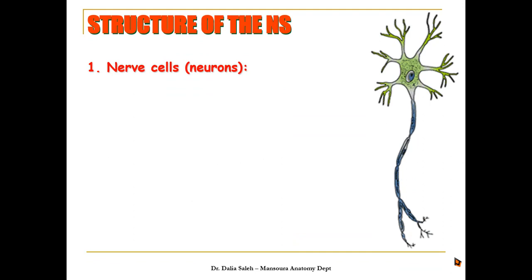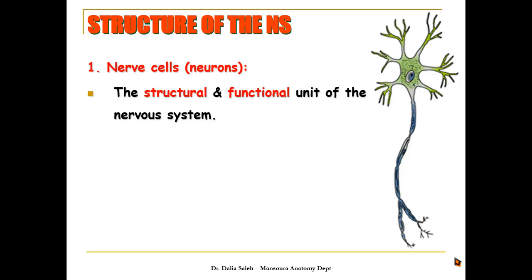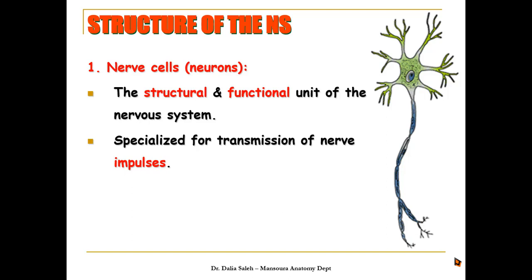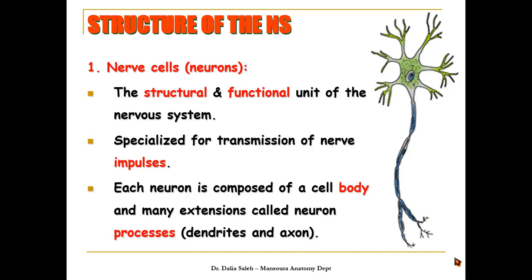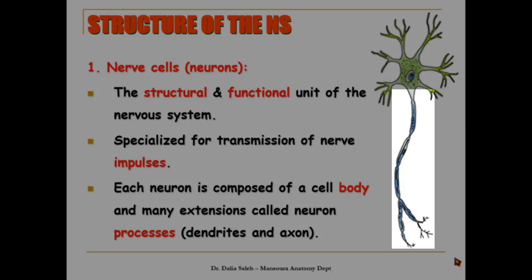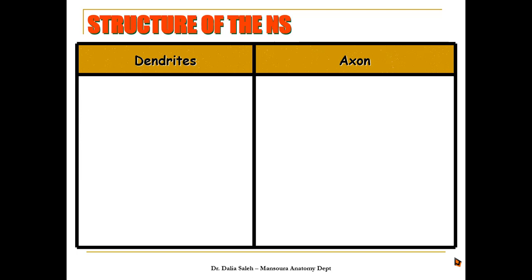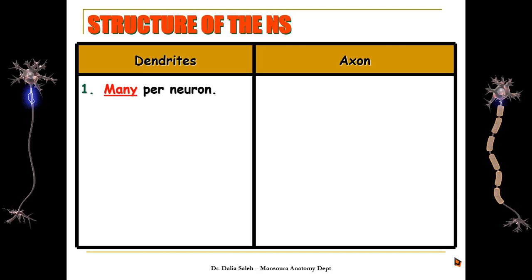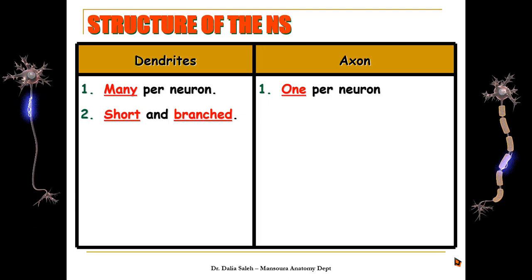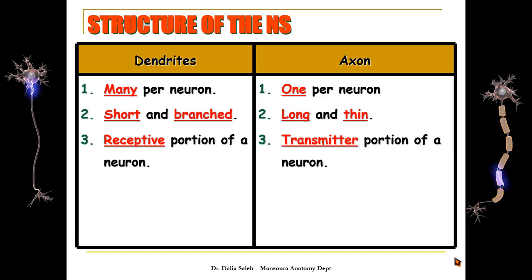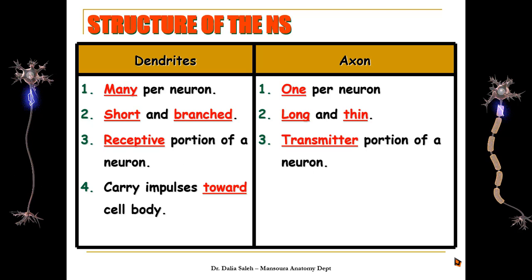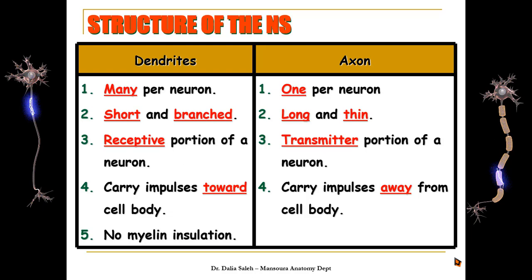The neuron is the structural and functional unit of the nervous system. It is a specialized cell for transmission of nerve impulses. Each neuron is composed of a cell body — called the soma — and many extensions called neuron processes, divided into dendrites and axon. The dendrites are many per neuron while we have only one axon per neuron. The dendrites are short and branched while the axon is long and thin. The dendrites are the receptive portion while the axon is the transmitter portion, carrying impulses away from the cell body.